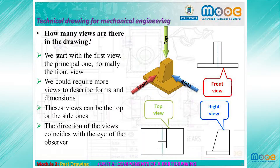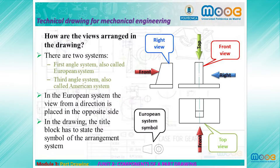How many Views are there in a Drawing? First, we need to start with the first View, the principal one, normally the Front View. After that we could require more Views to describe the form and dimensions. These Views can be the Top or Side ones — right side or left side. The direction of Views corresponds to the position of the observer.